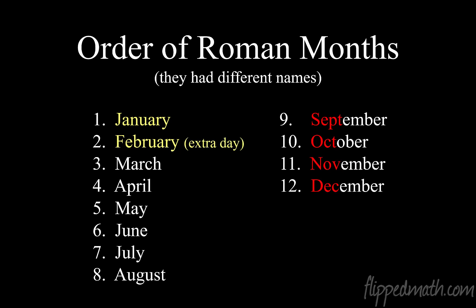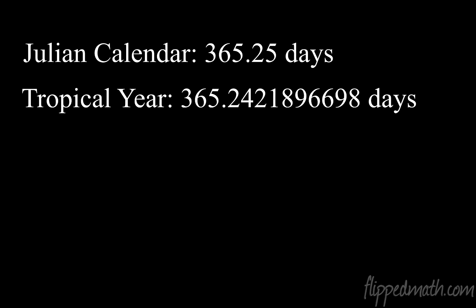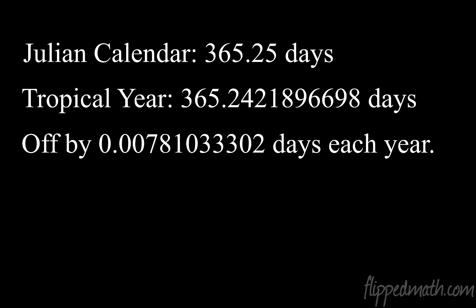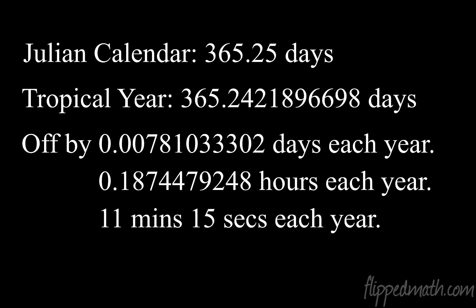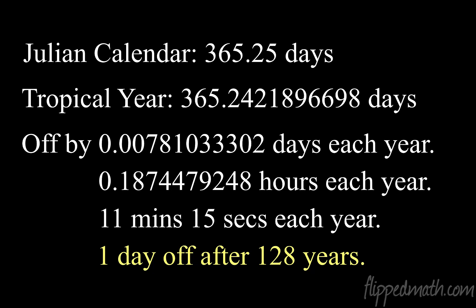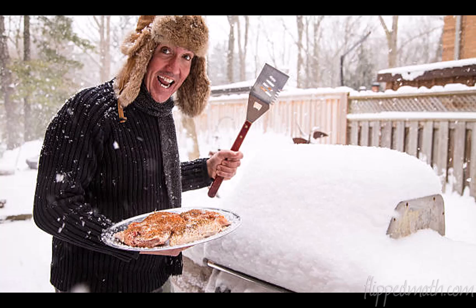What Julius Caesar's astronomers came up with was to put an extra day on February every fourth year — a leap year. So the Julian calendar is on average 365.25 days. That's very close to the tropical year at 365.24. The difference is just 0.0078 days per year, which works out to 11 minutes and 15 seconds each year. It will take 128 years for the Julian calendar to be off by one full day from the tropical year.